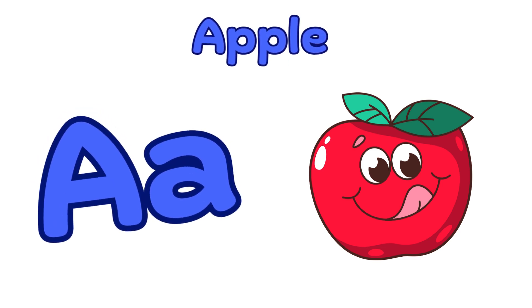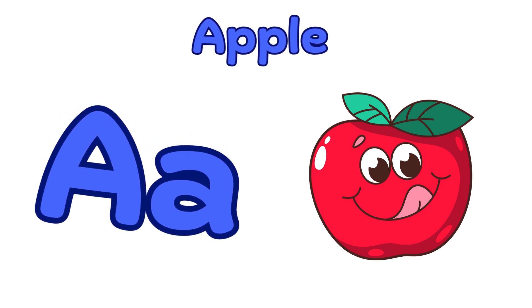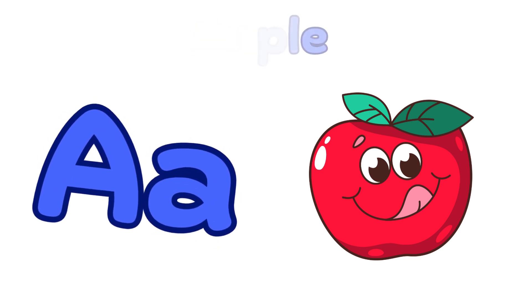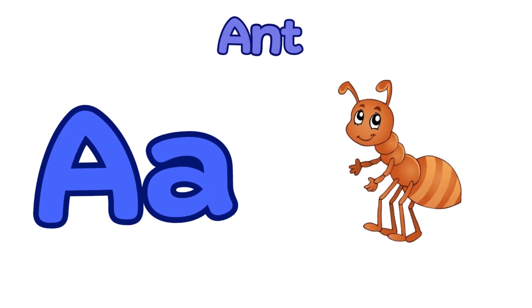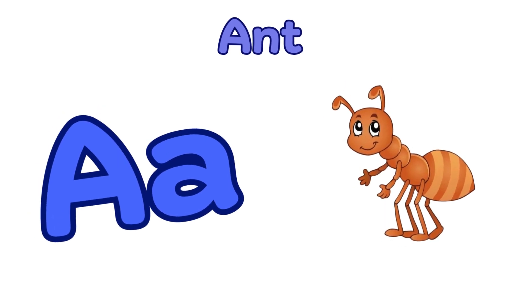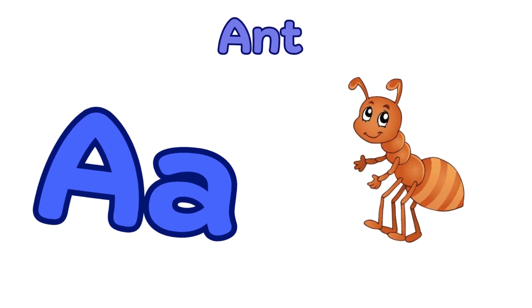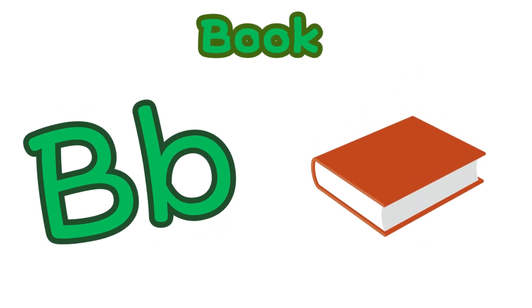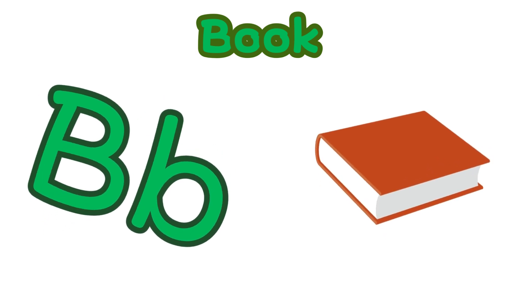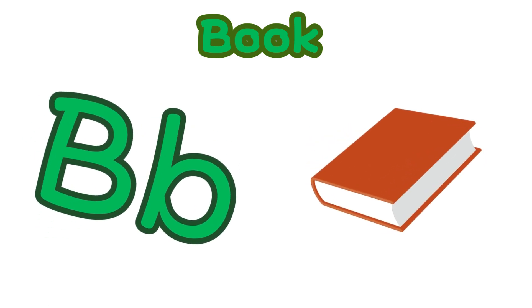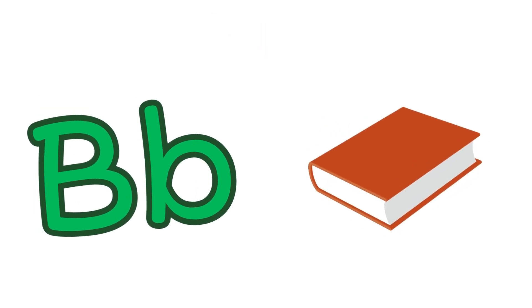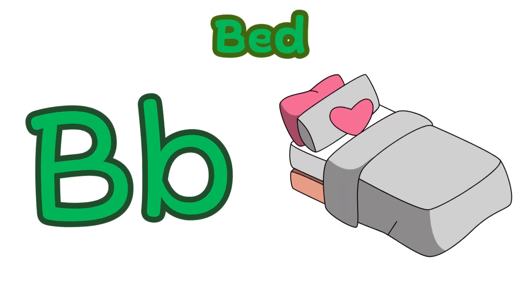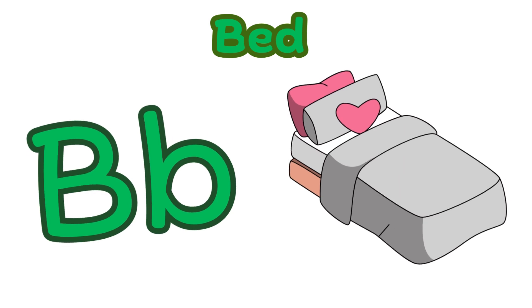A is for apple. A, a, a — apple. A is for ant. A, a, a — ant. B is for book. B, b, b — book. B is for bed. B, b, b — bed.